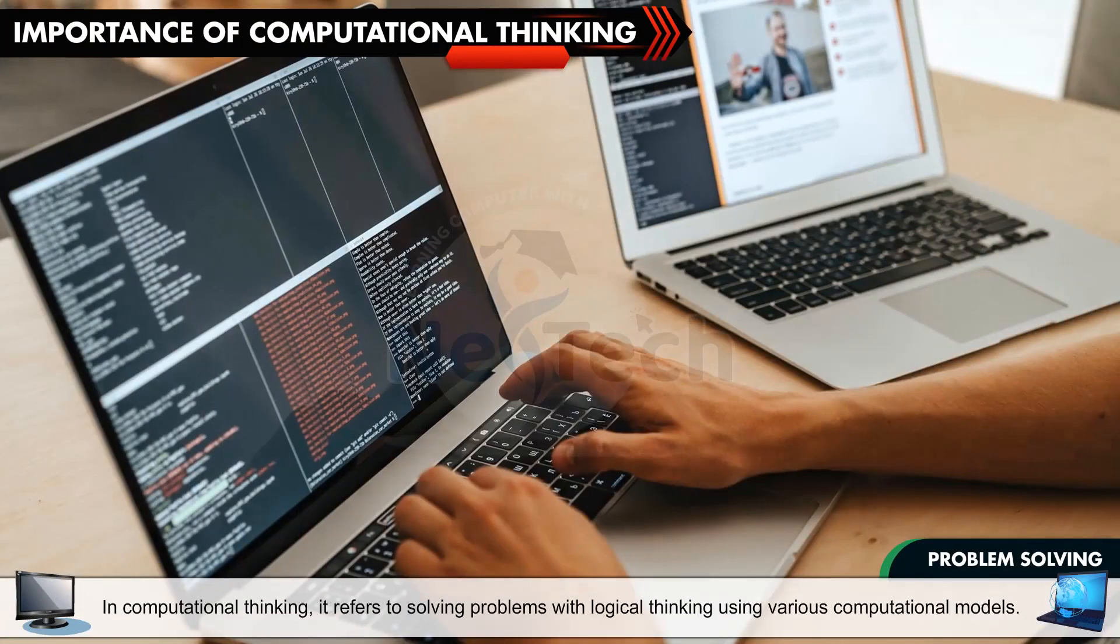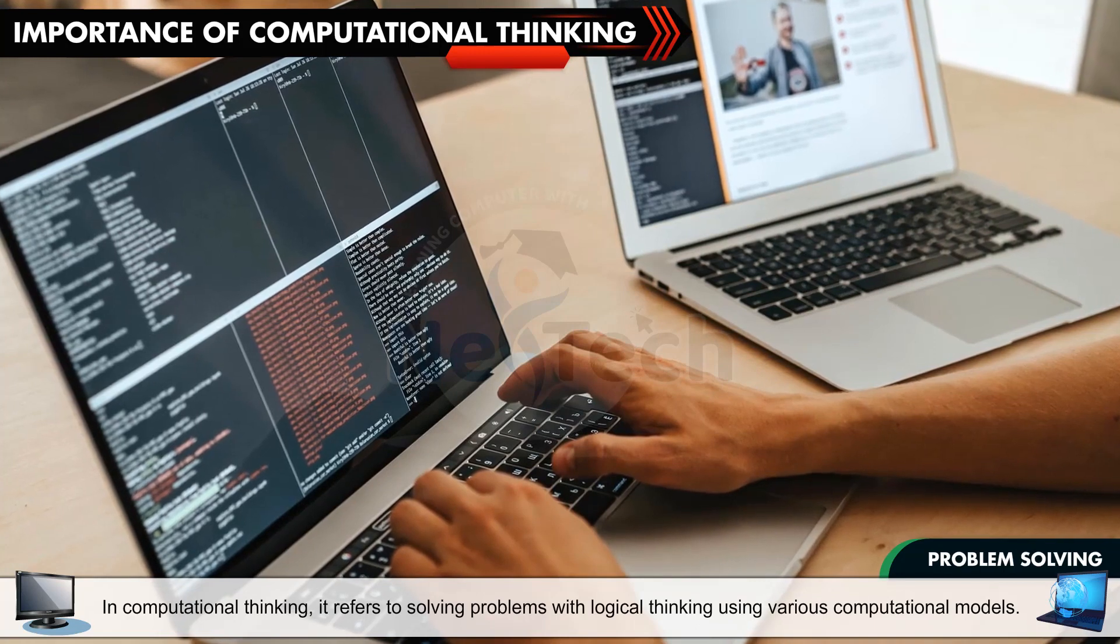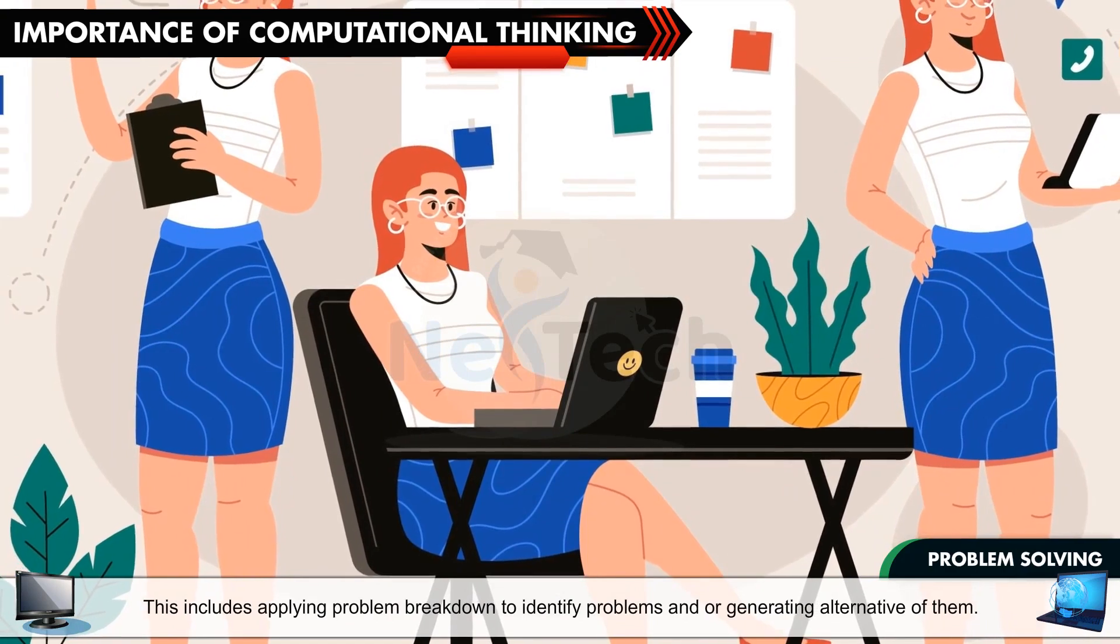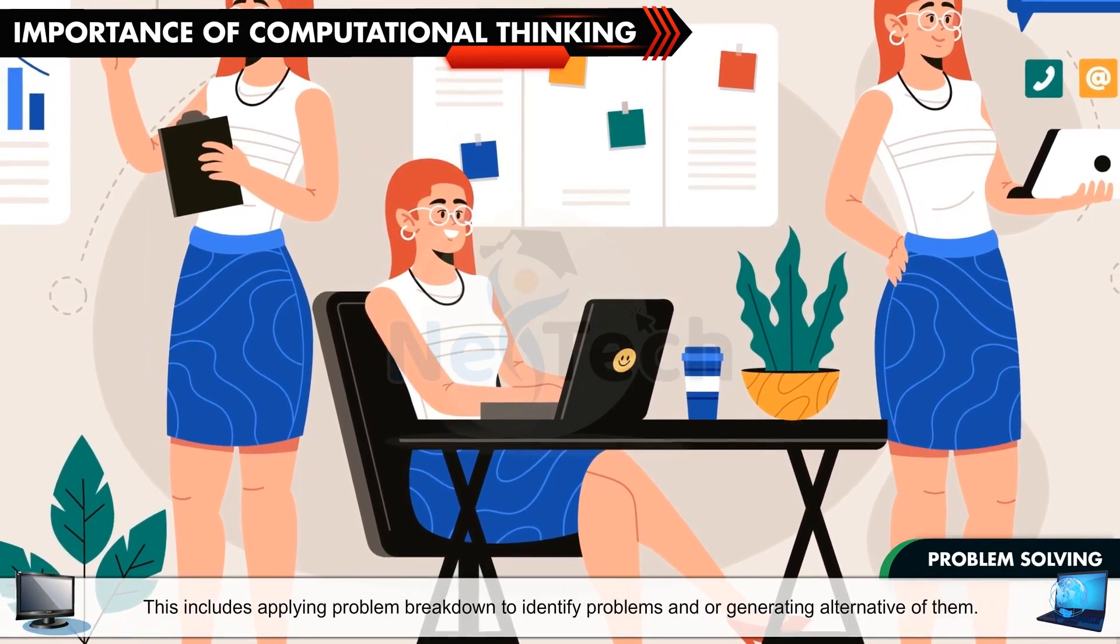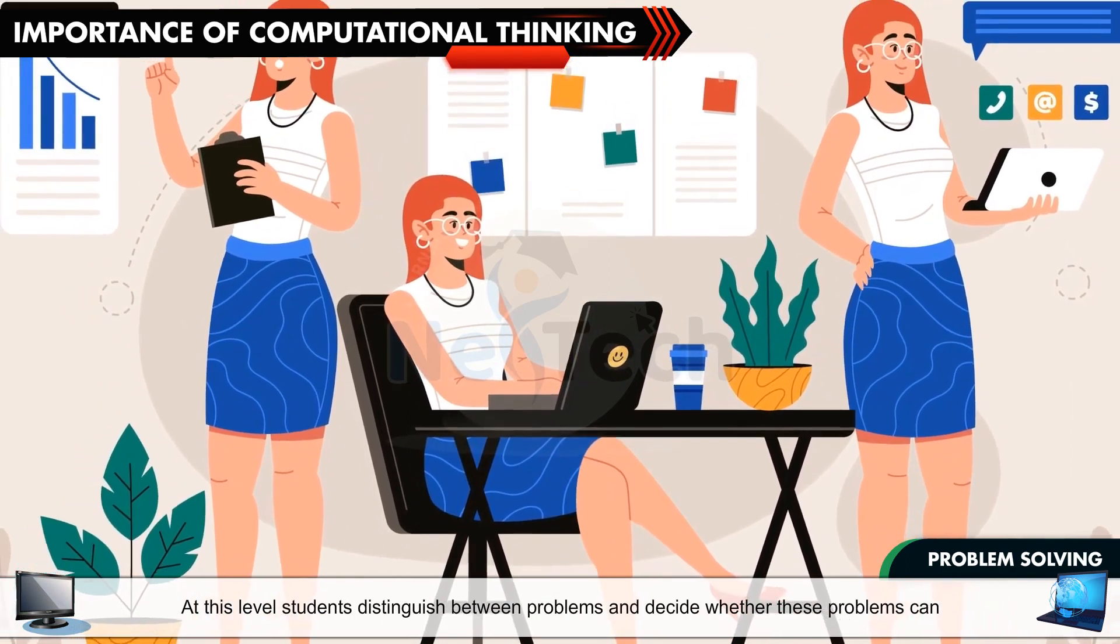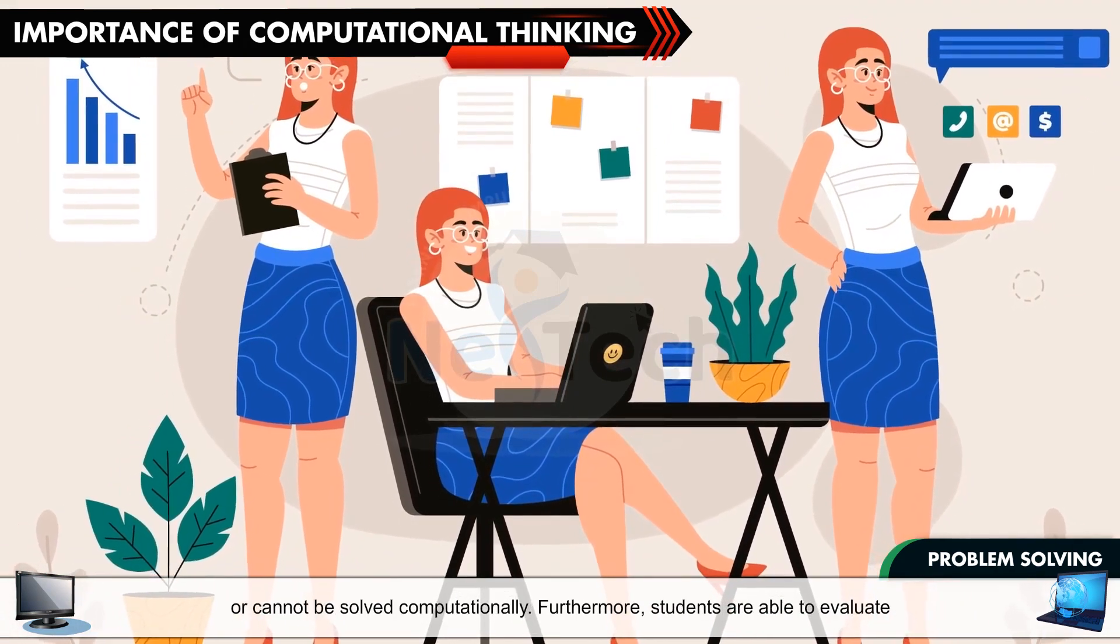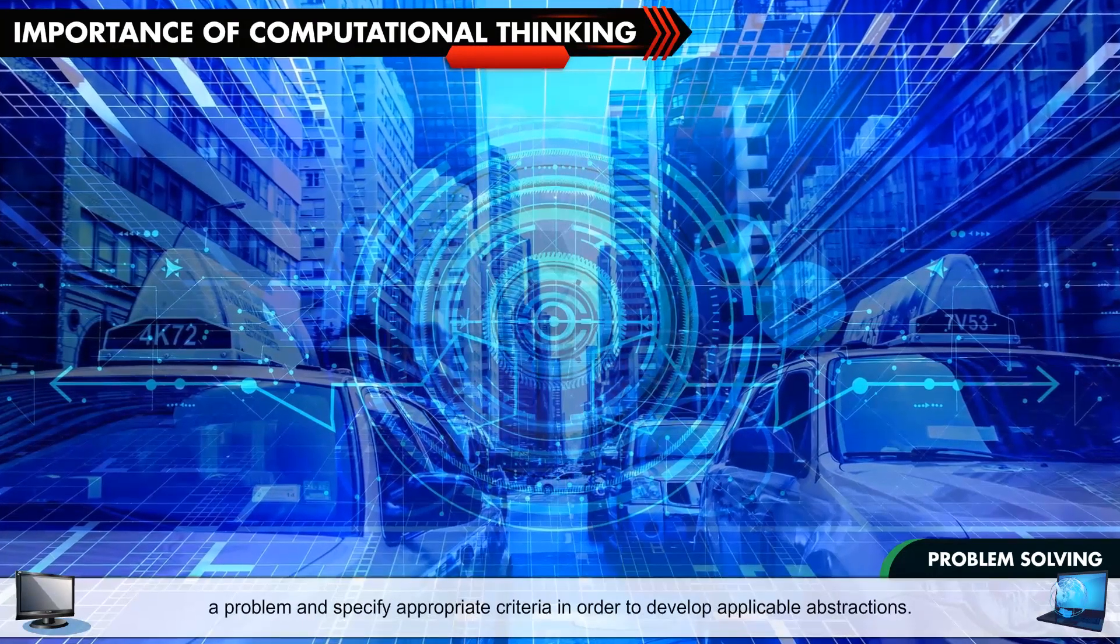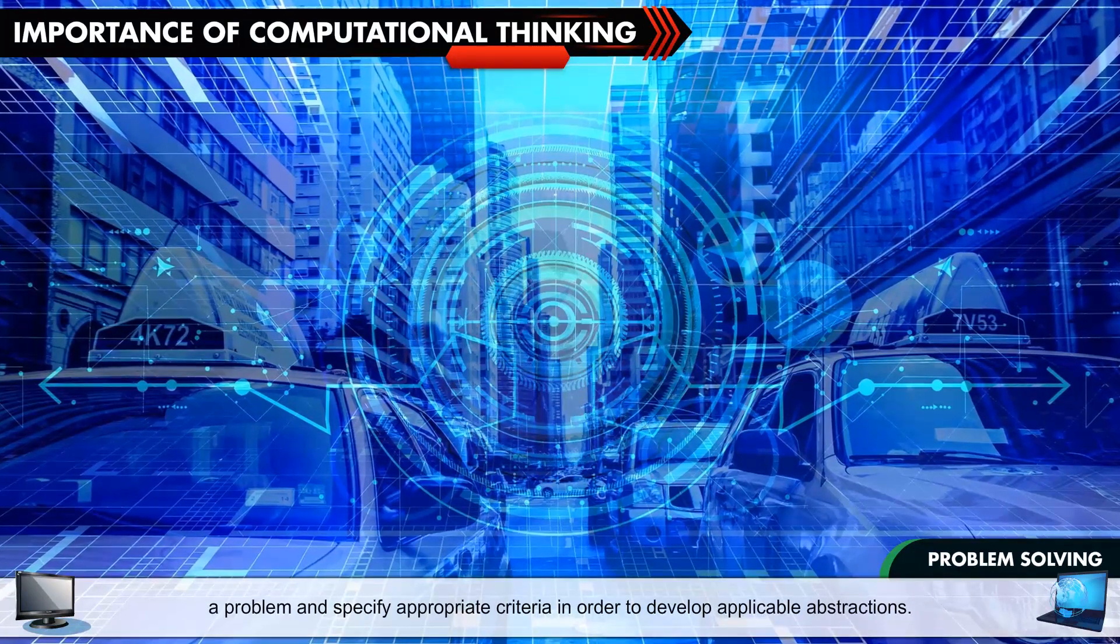Problem Solving: In computational thinking, it refers to solving problems with logical thinking using various computational models. This includes applying problem breakdown to identify problems and generating alternatives. At this level, students distinguish between problems and decide whether these problems can or cannot be solved computationally. Furthermore, students are able to evaluate a problem and specify appropriate criteria in order to develop applicable abstractions.